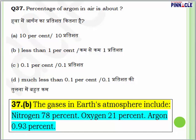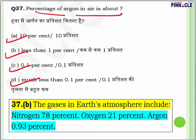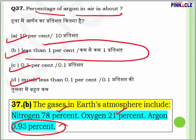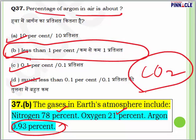Question 37: What is the percentage of argon in air? Open any NCERT book and in the topic of atmosphere you will find: 78% nitrogen, 21% oxygen, and some carbon dioxide. The percentage of argon in air is about 0.93%, so it is less than 1%. Answer is B — less than 1%.